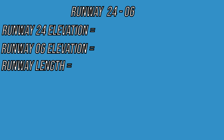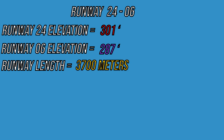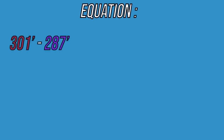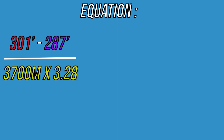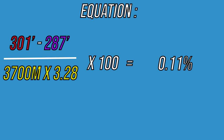For example, we have to calculate the runway slope of runway 2406 at Kingshaka. According to the charts we have the following information: runway 24 elevation 301 feet, runway 06 elevation 287 feet, and runway length 3700 meters. So let's put all of this into the equation: 301 feet subtract 287 feet, divided by 3700 meters times 3.28, times 100. This gives us a 0.11 percent slope.